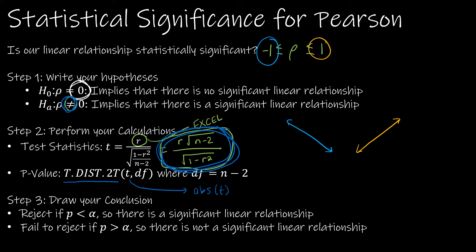We're going to draw our conclusion the same way we have before. Reject if P is less than alpha or fail to reject if P is greater than alpha. Keep in mind that we're not just rejecting and failing to reject. If we reject, there is a significant relationship, and if we fail to reject, there is not a significant linear relationship.